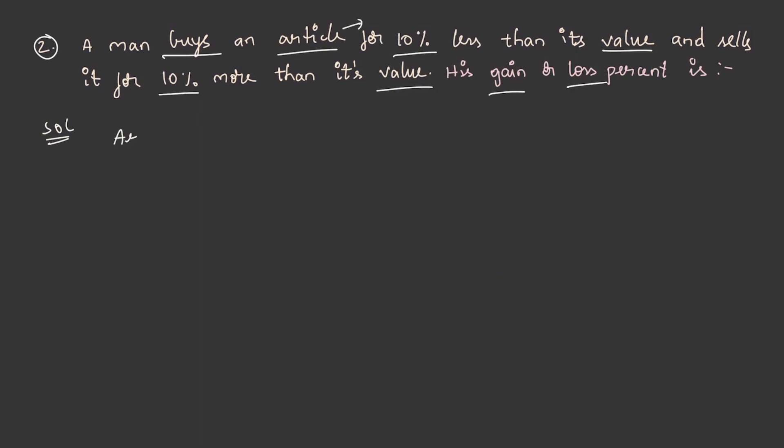So, let us take the article value as x and the man buys the article for 10 percent less than its value. If the article value is x, then the cost price is 90 percent of x as he buys it for 10 percent less than its value.